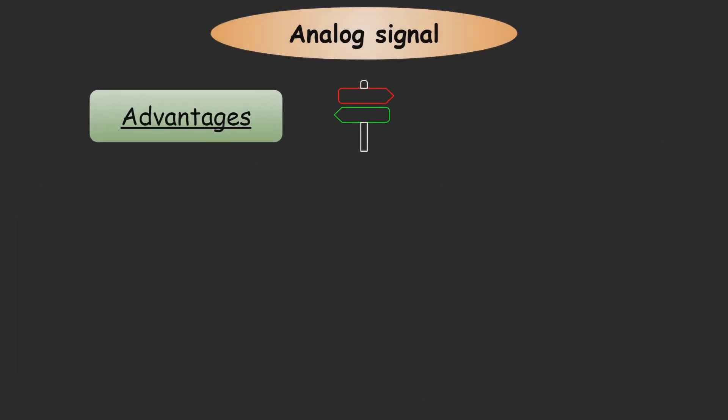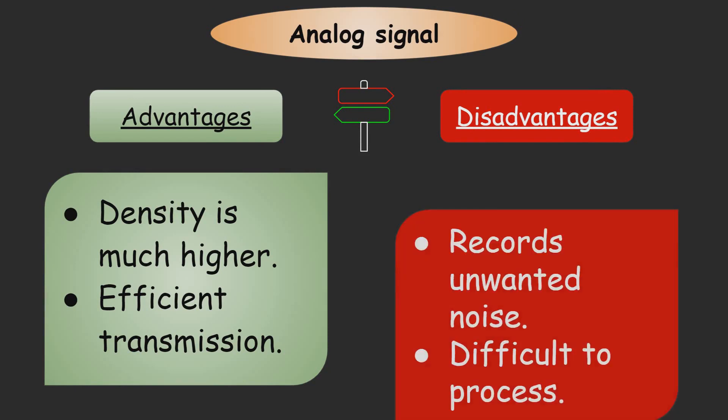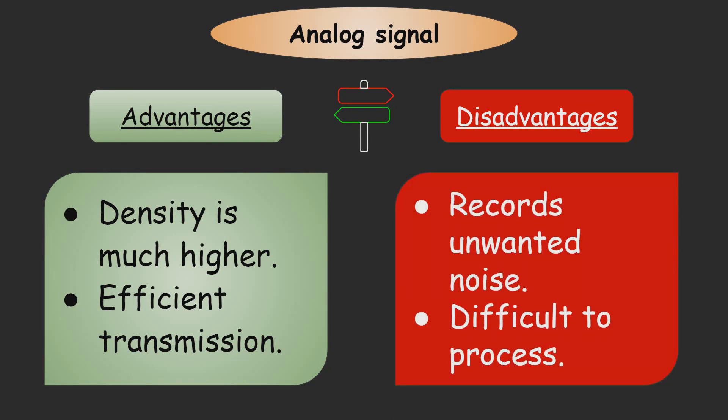Advantages of analog signal: its density is much higher, it has efficient transmission. Now disadvantages of analog signal: it records unwanted noise and it is difficult to process.